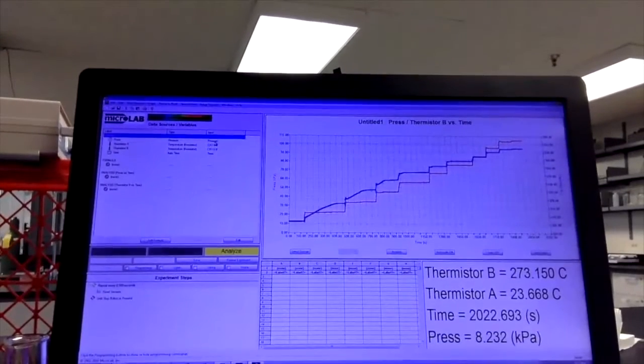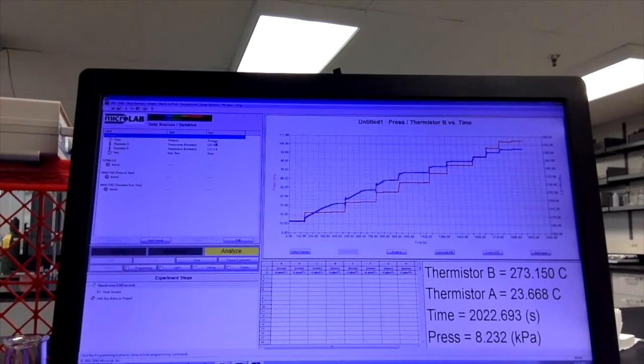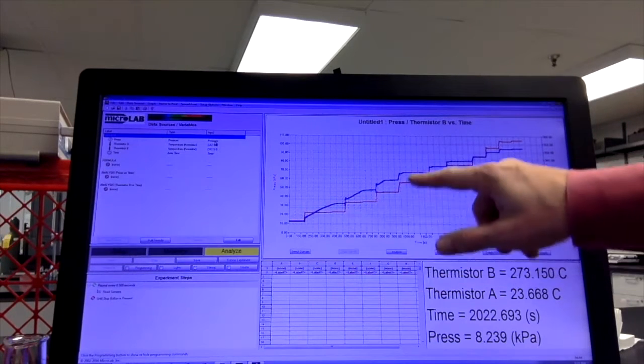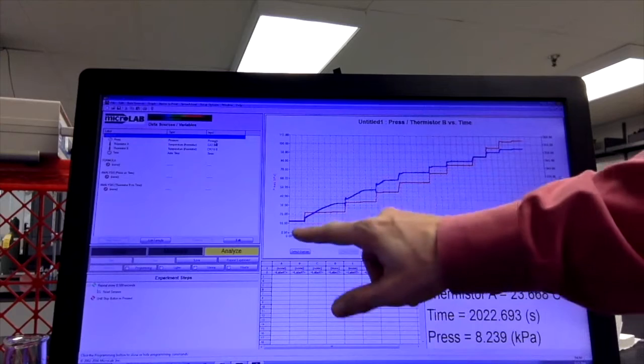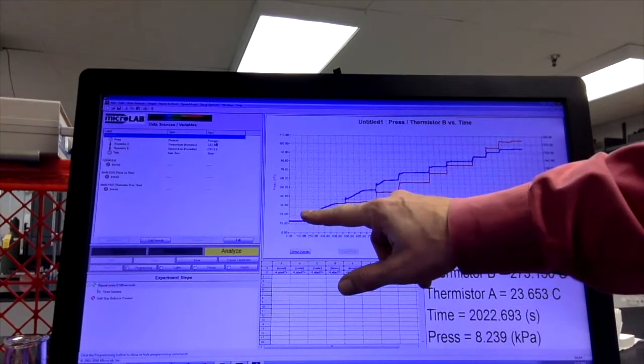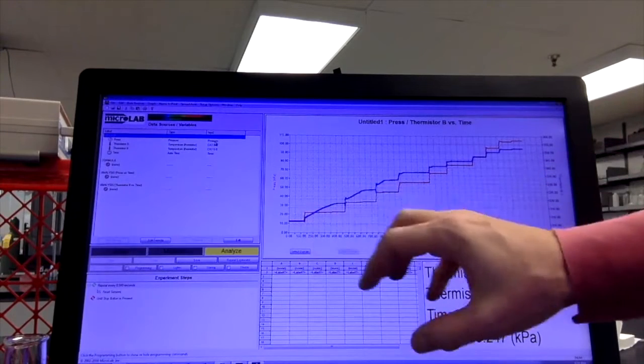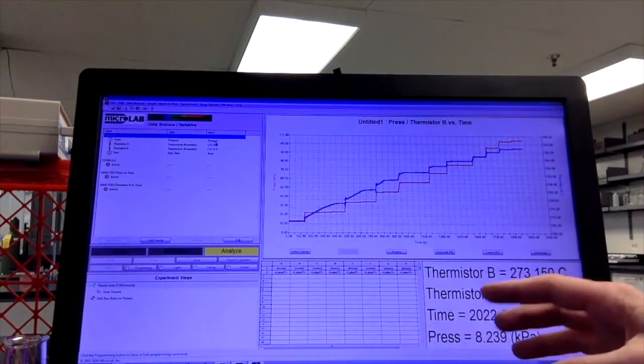There you go, a staircase to data—maybe not heaven, but at least to data. What we have here is the red is the pressure, the blue is the temperature. We set the pressure by adjusting the vent valve, allow the system to equilibrate, turn up the heat until we get a steady boil.